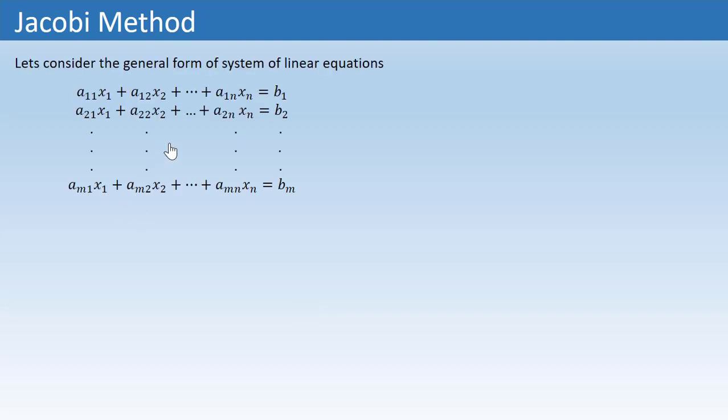In this tutorial, we are going to discuss how to find the approximate solution of a system of linear equations using the Jacobi method. Let's consider the general form of a system of linear equations, where the A's and B's are the known numbers and X are the unknown numbers which we need to find using this method.